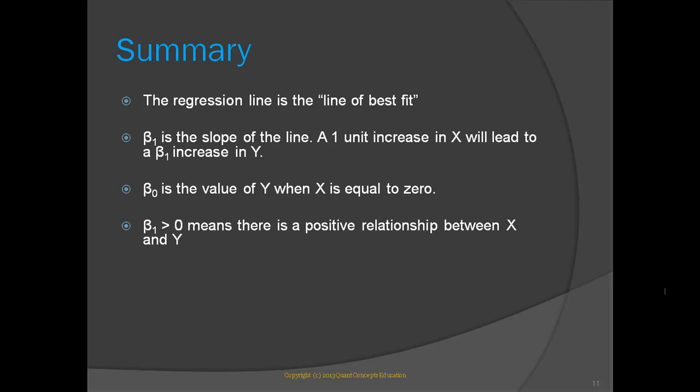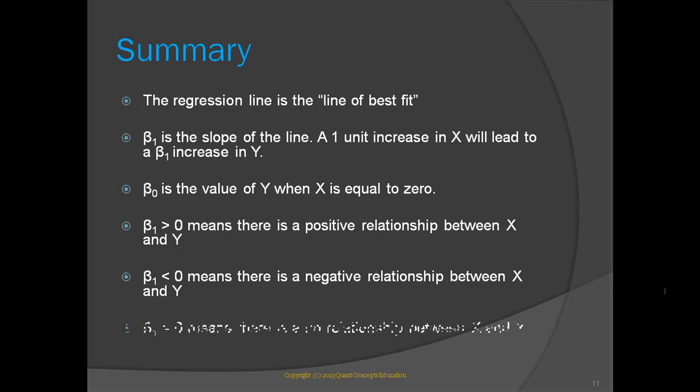If beta 1 is larger than 0, then there is a general positive relationship between x and y. That is, when x increases, y tends to also increase. If beta 1 is less than 0, then there is a general negative relationship between x and y. That is, when x increases, y tends to decrease. If beta 1 is equal to 0, then there is no relationship between x and y. If x changes in value, this has no effect on the value of y.